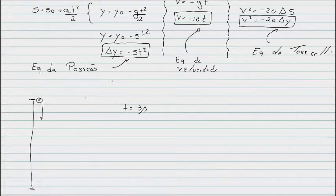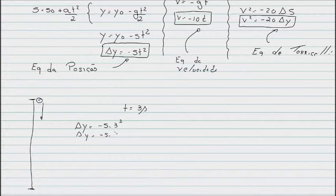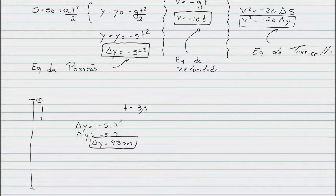Remember, the height. If I want to know the height, here's the height equation: Delta y equals minus 5 times 3 squared. Delta y equals minus 5 times 9. Delta y equals 45 meters. Shouldn't it be negative? It's a variation in height, so we don't need to represent the sign.